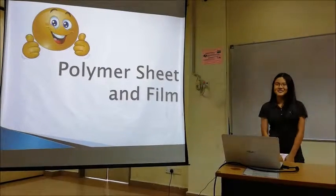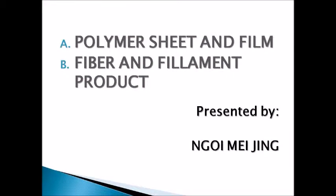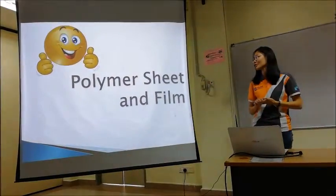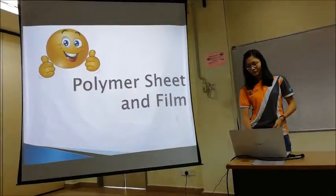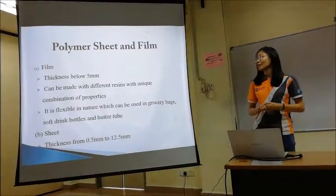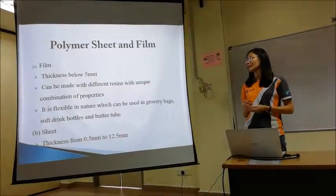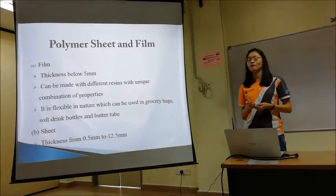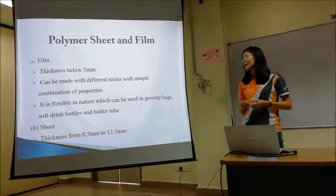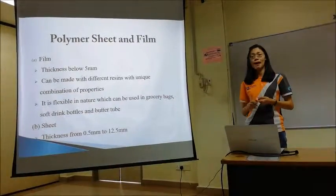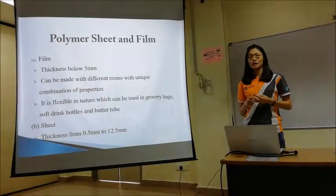That's all for my part. Thank you. Now I would like to proceed to my part, which is polymer sheet and film. First of all, the thickness of the film is below 0.5mm and it can be made with different resistance with unique combinations of properties. It is flexible in nature and can be used in grocery bags, soft cream bottles, and butter tubs.